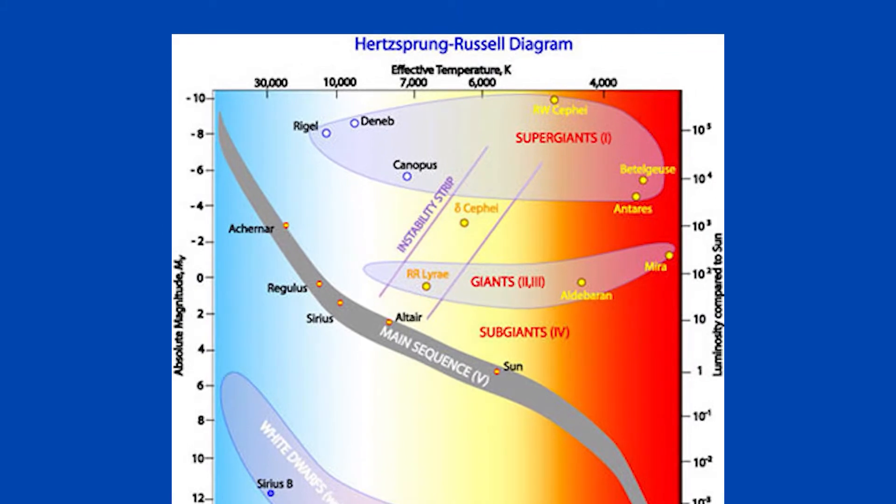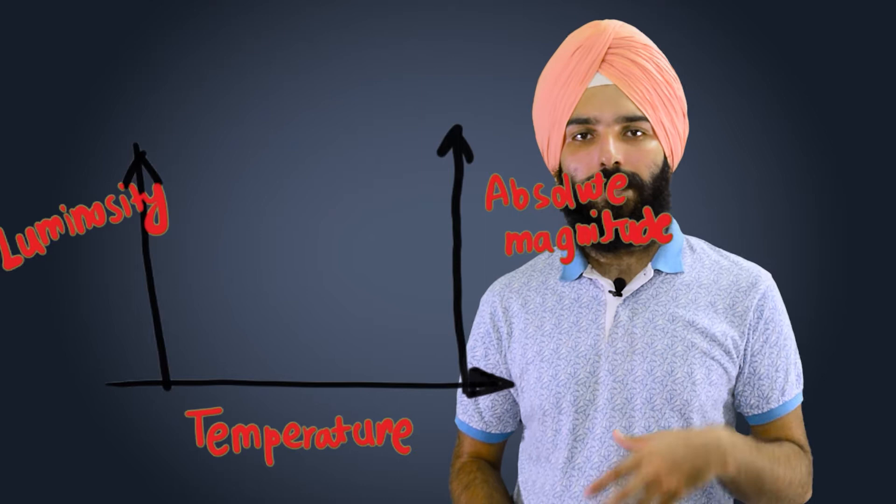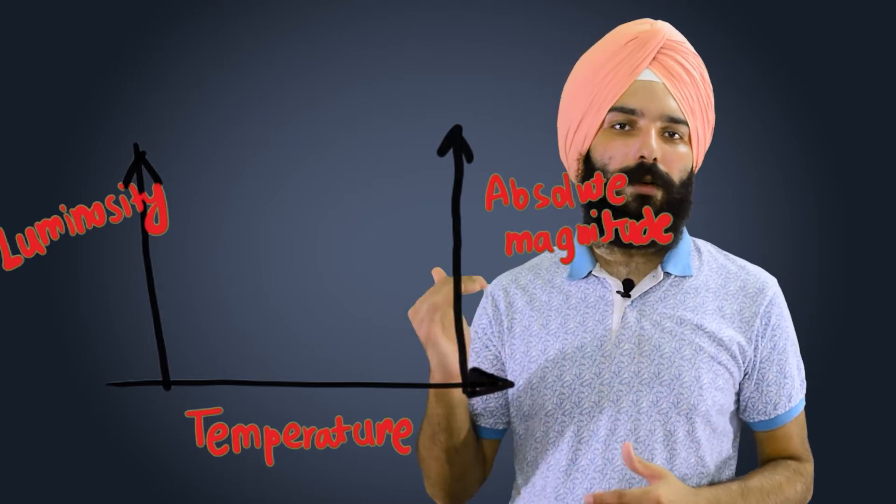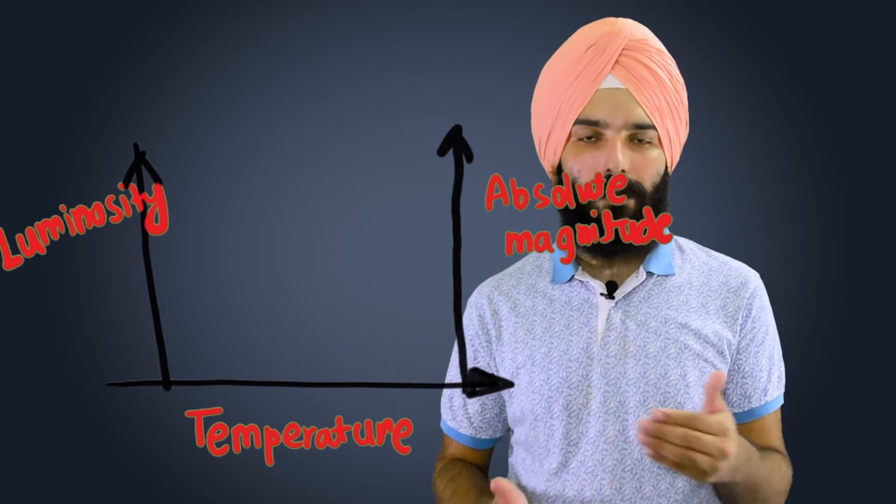For the vertical axis here, we can have the absolute magnitude and the luminosity of the star. Now if you want to complete the box for the top part of this diagram here, we can label the different spectral classes of the stars.